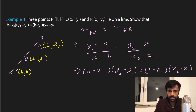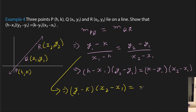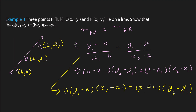If we simplify by cross-multiplying: (Y1 − K)(X2 − X1) = (X1 − H)(Y2 − Y1). Rearranging, we get (H − X1)(Y2 − Y1) = (K − Y1) on the other side, with the minus signs cancelling. This is the derived condition for collinearity.